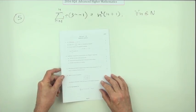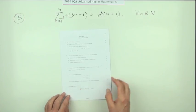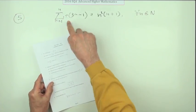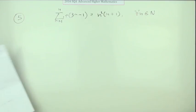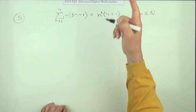Number five from the 2016 Advanced Higher Maths. Proof by induction, it's the summation formula type. Four marks. Notice n is a natural number so it's starting at one.